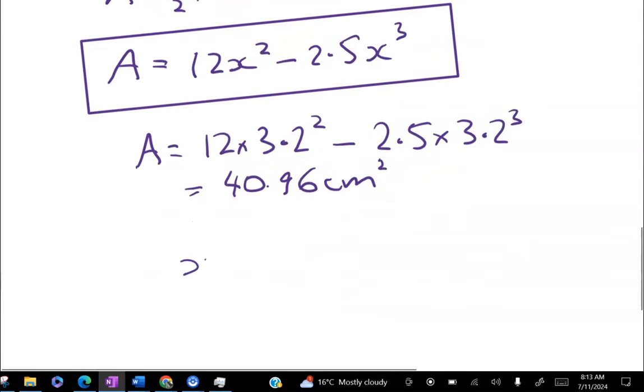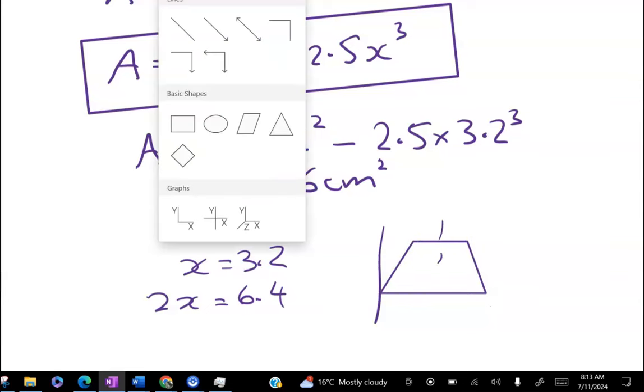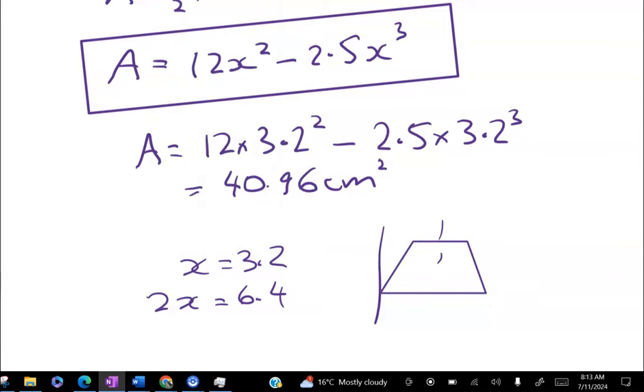Whereas what we found in our answer was that we had x = 3.2. And then 2x is going to be 6.4. And if you're thinking about that parabola, I don't know what's happened there. It's not letting me draw a parabola.